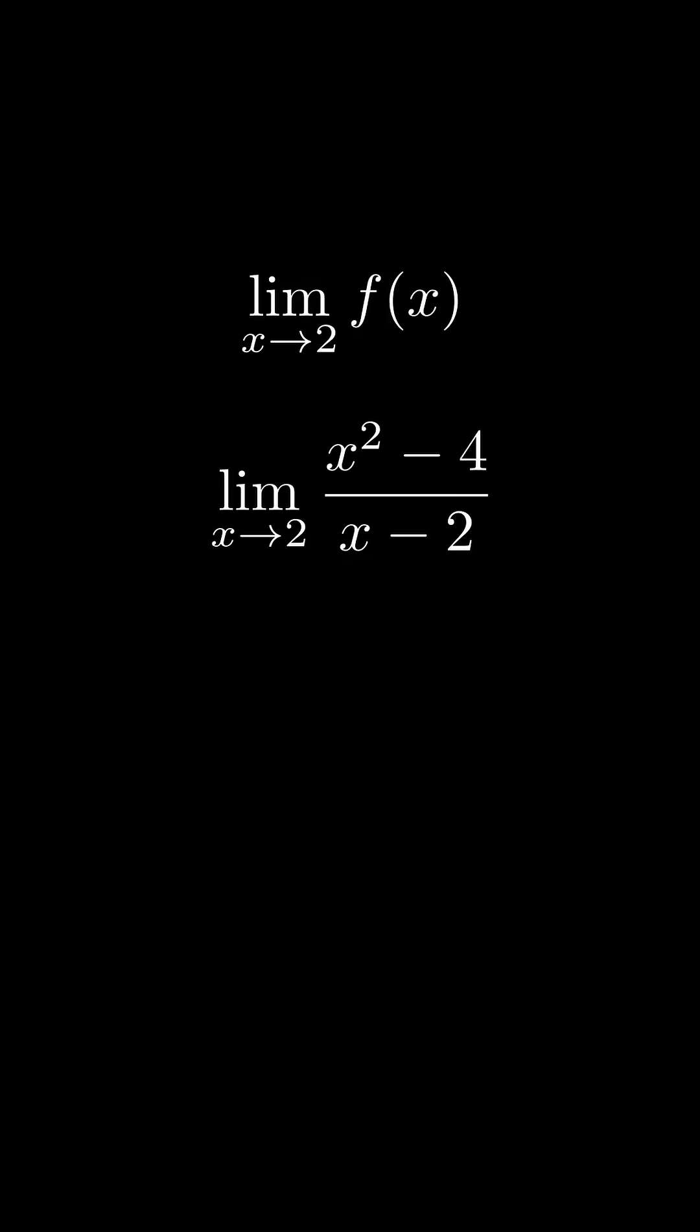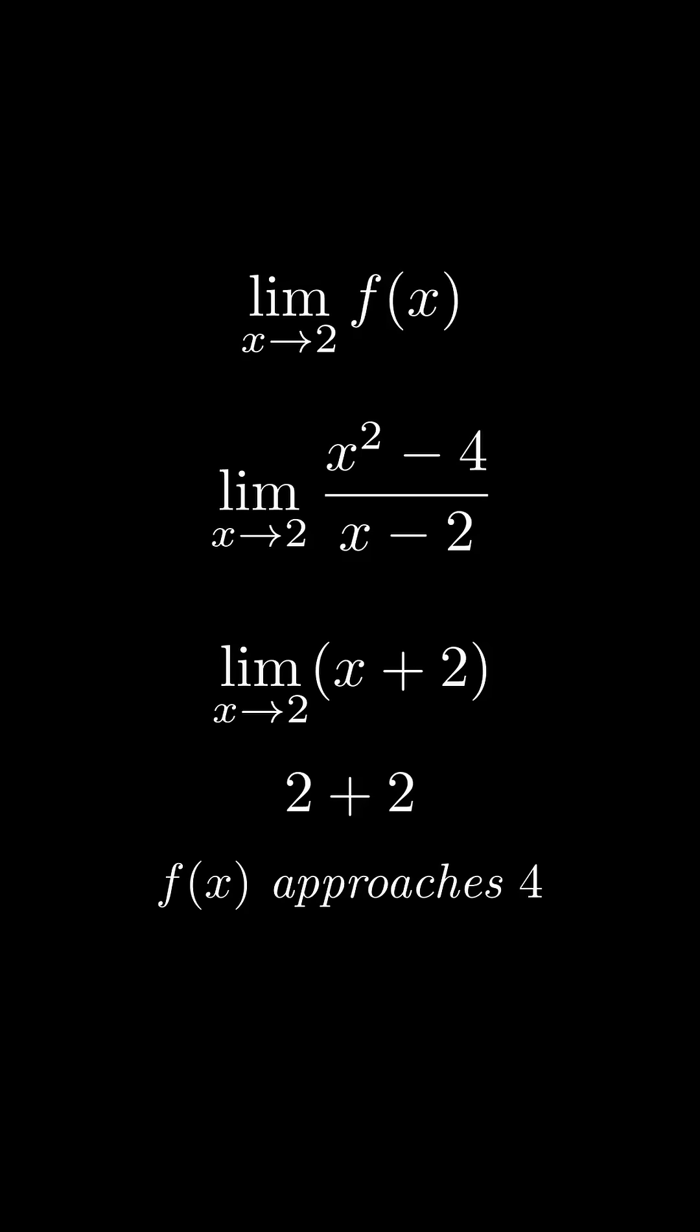We can solve this by factoring the numerator, cancelling like terms, and getting limit as x approaches 2 of x plus 2. Now we can plug in 2 for x, and we get 2 plus 2, which equals 4. So f(x) approaches 4.